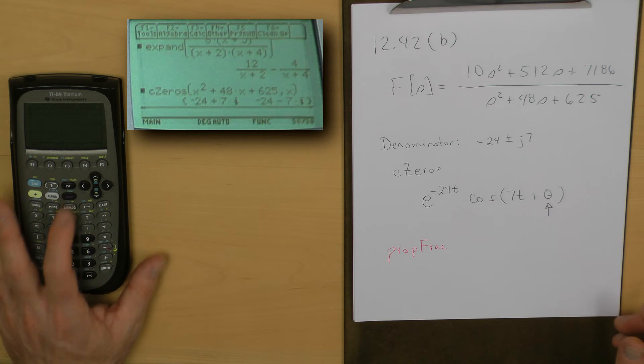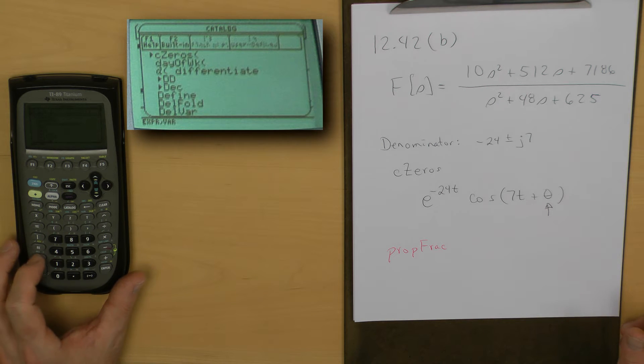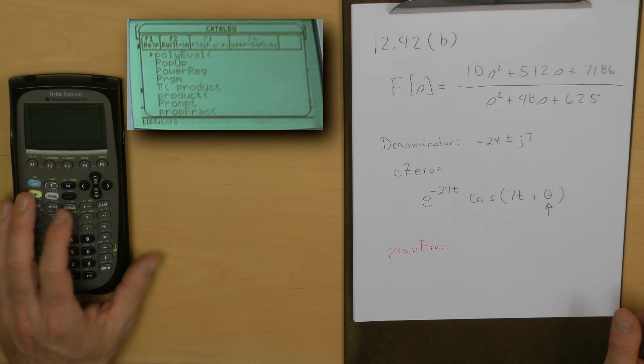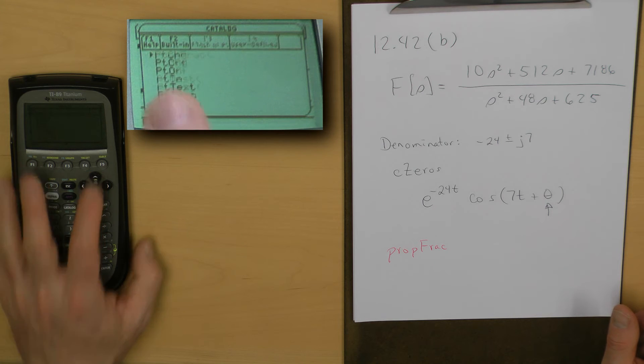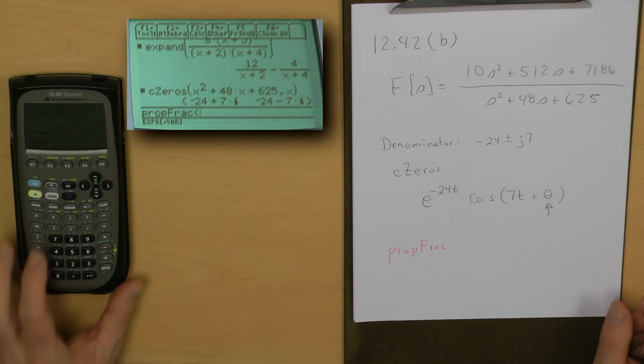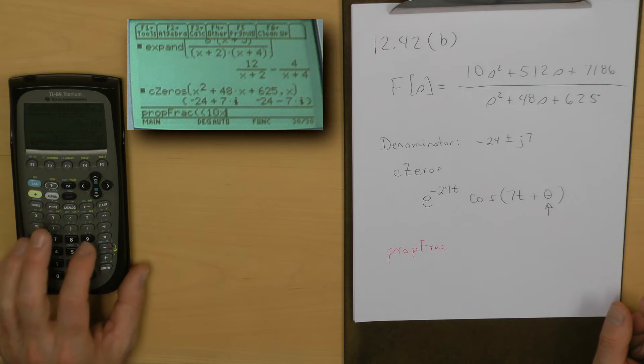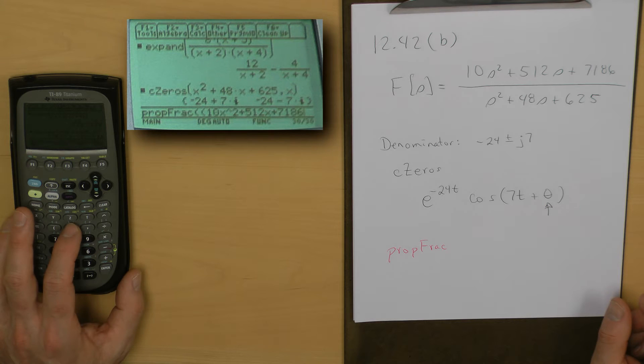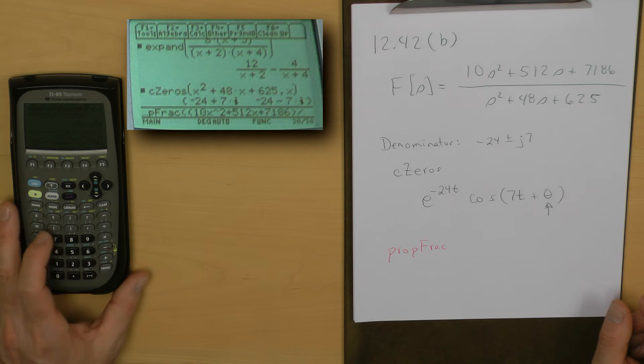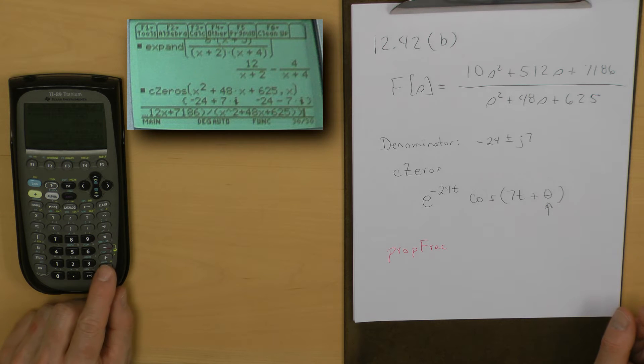Let's clear the command line. I will go down to the P and go up one. Now there's my proper fraction. What I will do is input the numerator polynomial, 10X squared plus 512X plus 7186, and divide that by the denominator which is X squared plus 48X plus 625, and close that proper fraction.